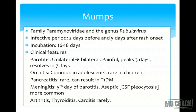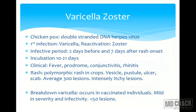Pancreatitis is a rare complication of mumps and can result in type 1 diabetes due to insulin deficiency. Meningitis is very common but mostly asymptomatic — however, lumbar puncture shows pleocytosis (elevated WBC) in 60–70% of cases. Arthritis, thyroiditis, and carditis are rarely seen. If not immunized for MMR and without a prior mumps attack, vaccination with MMR is strongly advised.